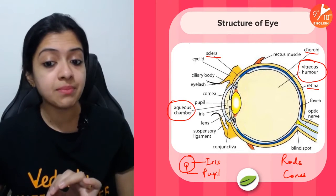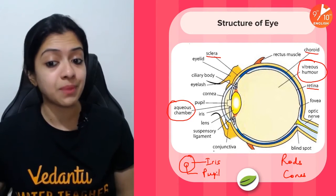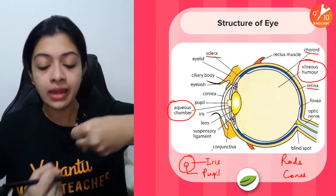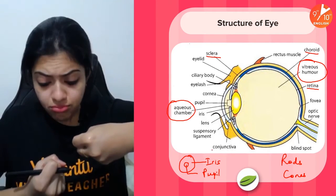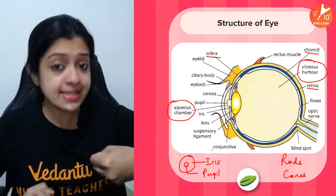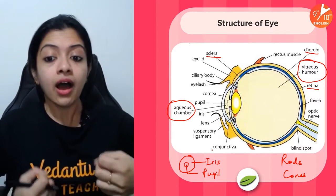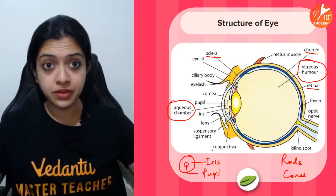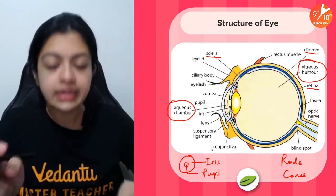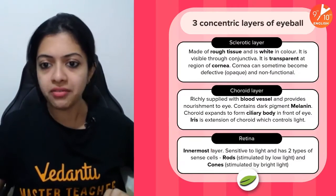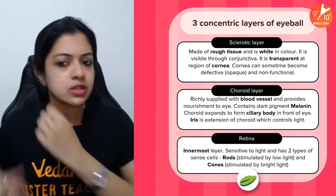Additionally, you need to know about the ciliary muscles and the suspensory ligaments, which help in expanding or contracting the lens of the eye in order to help with distant vision or nearby vision respectively.